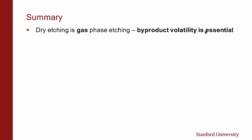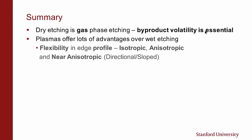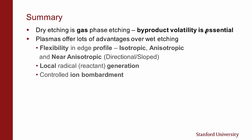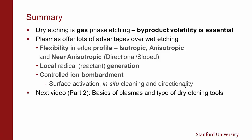Summary: dry etching is a gas phase etching process where byproduct volatility is essential. Plasma offers many advantages over wet etching, including flexibility of etch profile — isotropic, anisotropic, and near-anisotropic — as well as local generation of reactive radicals and controlled ion bombardment, which can activate surfaces and clean them. Ions have directionality, which is key to achieving anisotropic etching. In the next video, I'll talk about the basics of plasmas and the types of dry etching tools. Thank you.